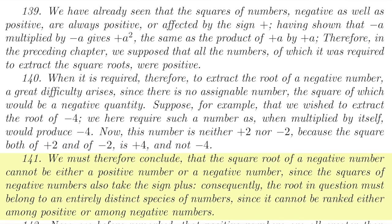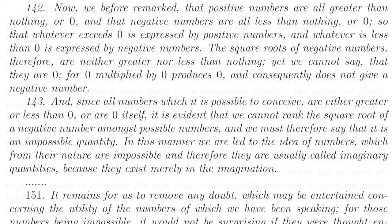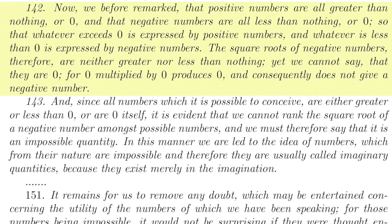Consequently, the root in question must belong to an entirely distinct species of numbers, since it cannot be ranked either among positive or among negative numbers. Now, we before remarked that positive numbers are all greater than nothing or zero, so he uses words nothing and zero interchangeably. And then later on, Hamilton would also use the word null to mean the same thing, so just be on top of that. And that negative numbers are all less than nothing or zero.